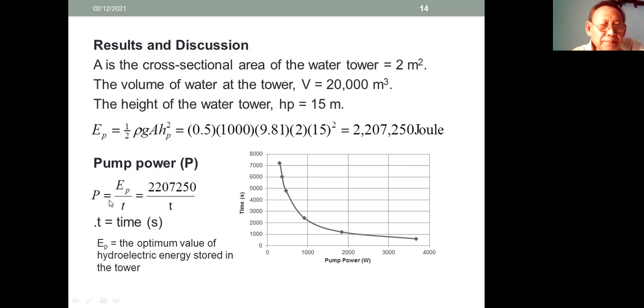Pump power P = EP/T is 2,207,250 divided by T. T is time in unit seconds. EP is the optimum value of the hydroelectric energy storage in the tower. The curve shows pump power versus time.